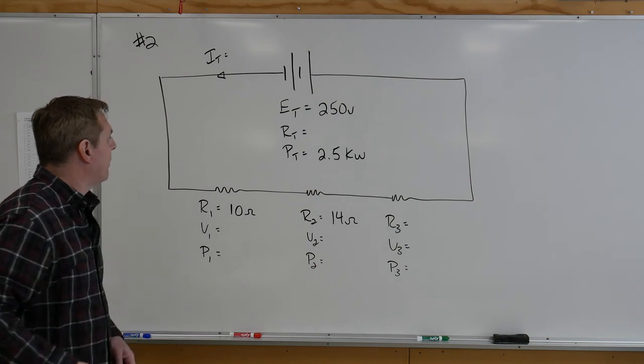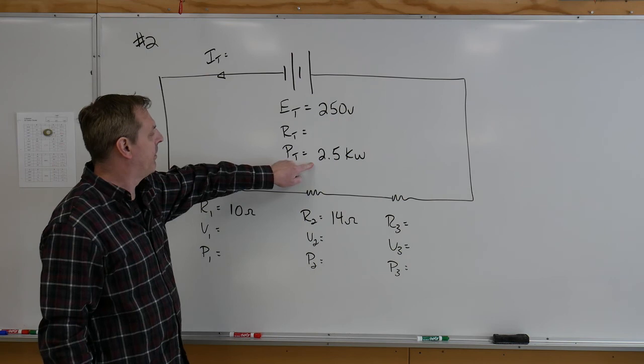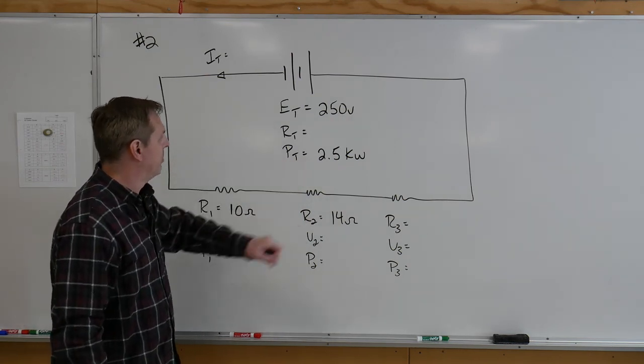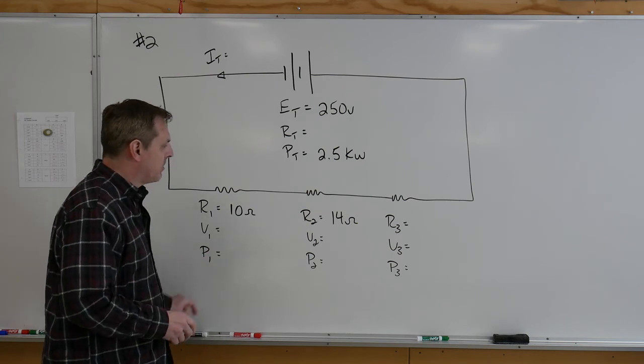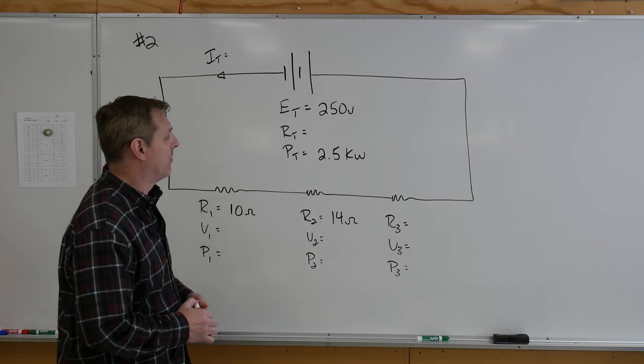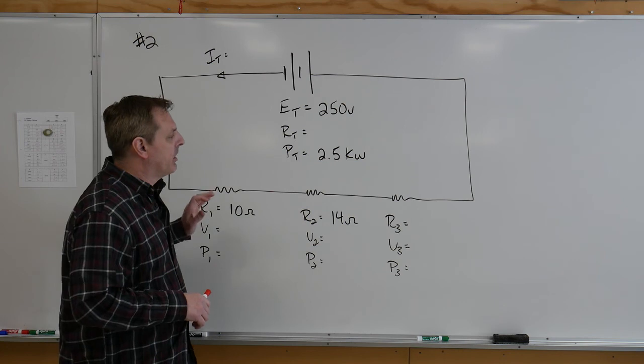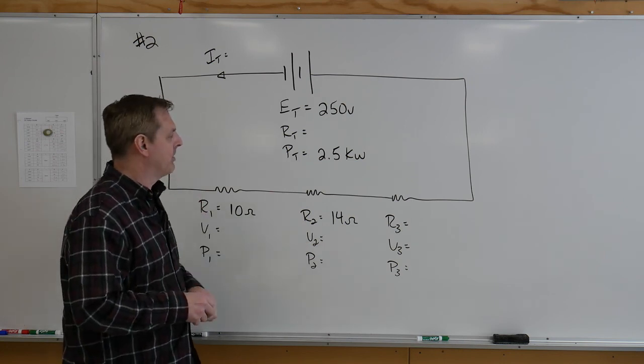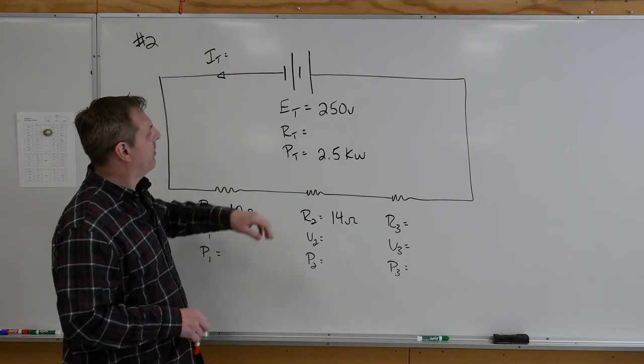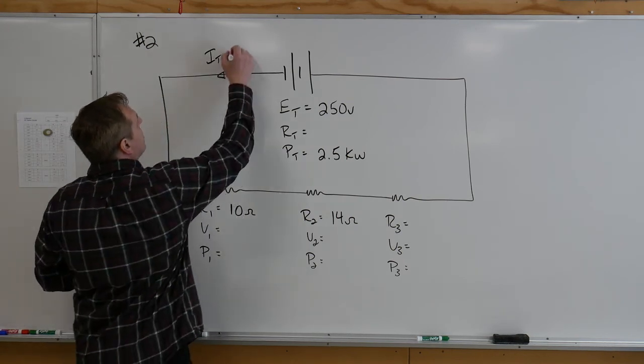In here they've given us a source voltage of 250 volts, they've given us a power total of 2,500 watts, and they've given us R1 and R2, and that's it. So from here we need to solve for all of the other blanks. Remember what I said though, the most important item that we can solve for to unlock a lot of the other answers would be to solve for current. So how can we get that? We can go 2,500 watts divided by 250 to get our current of 10 amps.